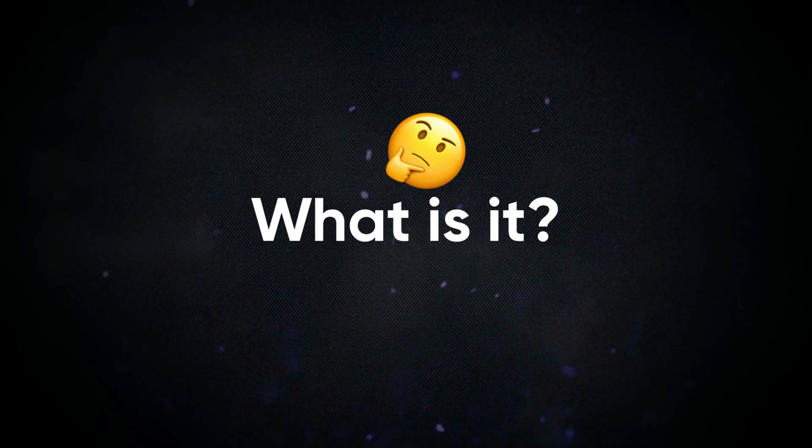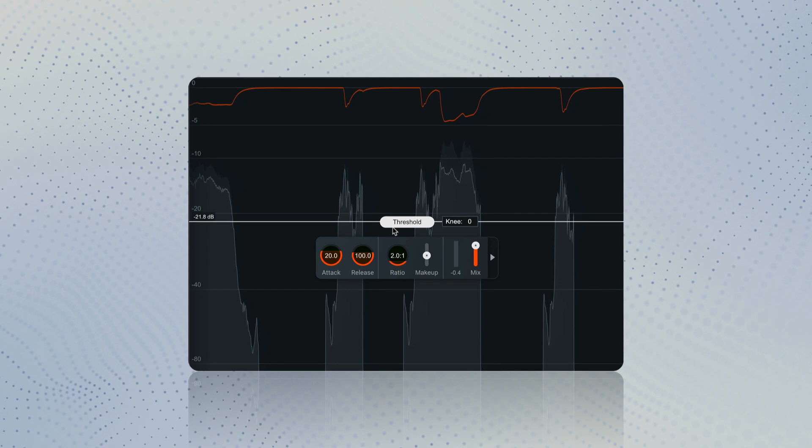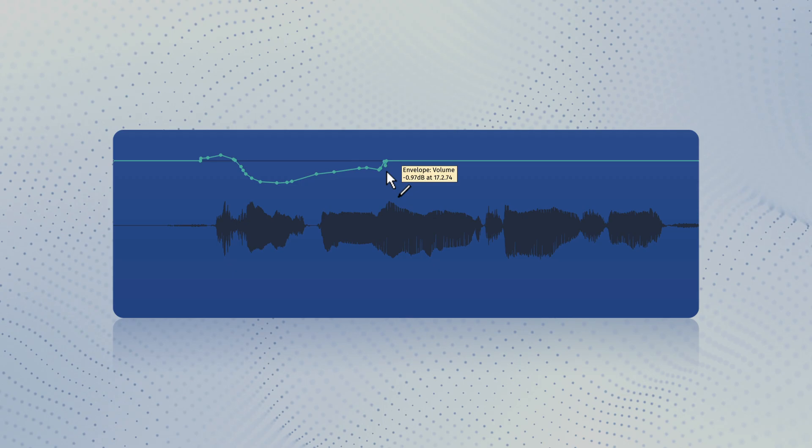A compressor is a processor that controls dynamic range. That means it brings the loudest parts down and the quietest parts up. It does this by automatically adjusting the volume of a source when it reaches a certain level. You can think of it as a machine that moves the fader up or down for you.